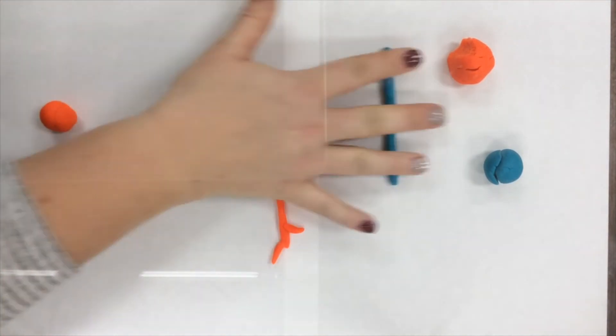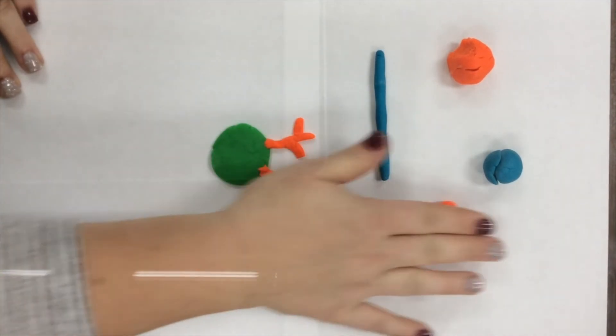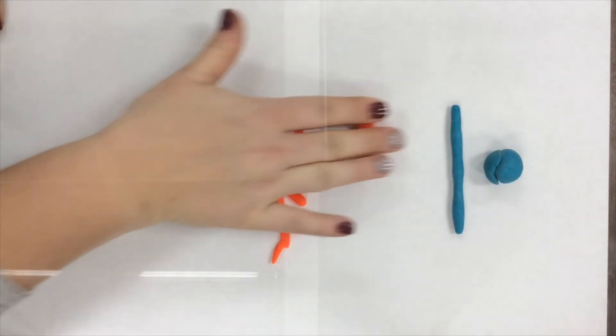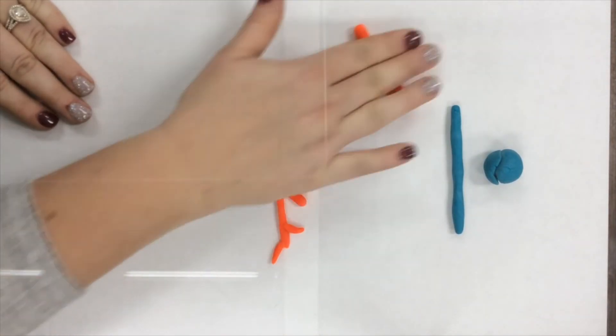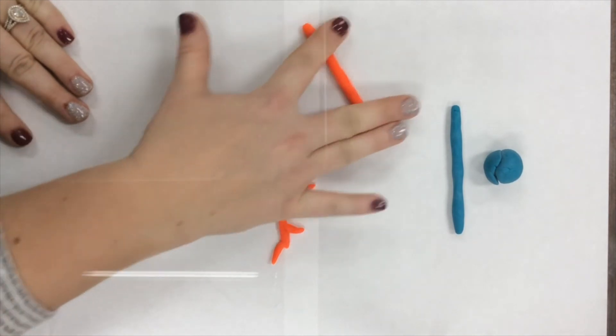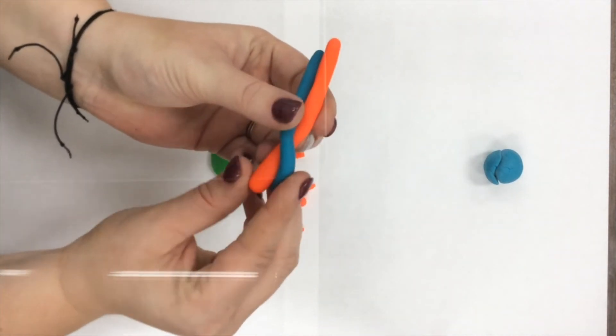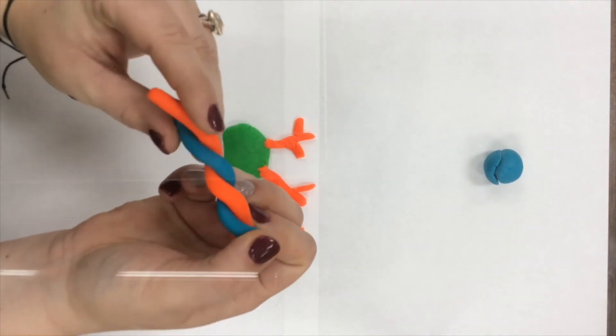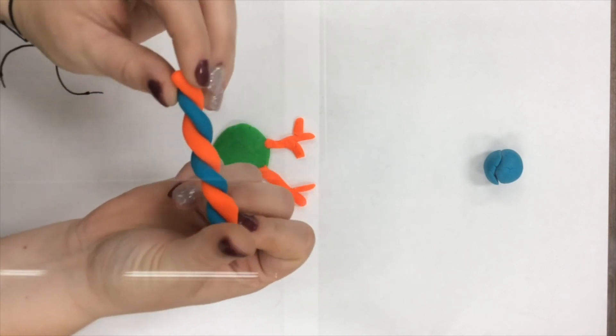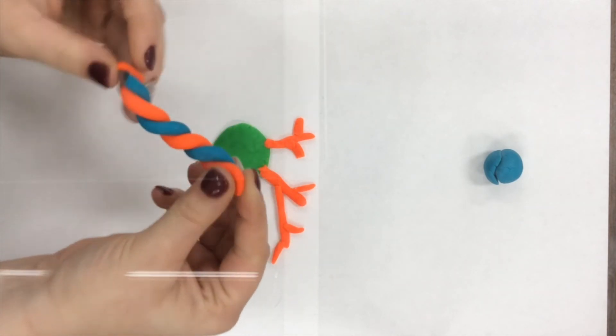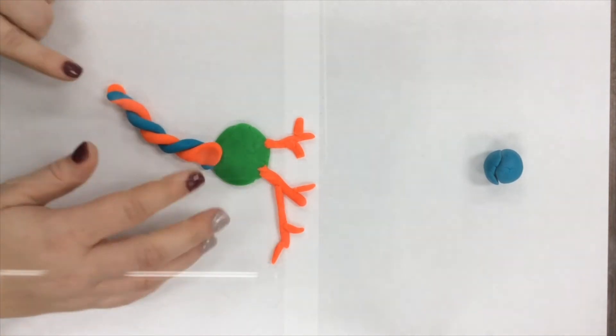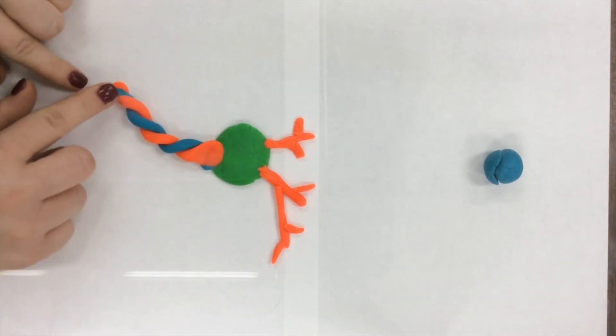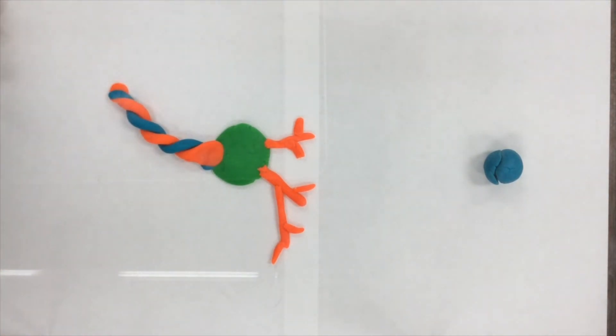I rolled each color into a thin line and then took them and twisted them together to make the axon of our neuron. Here I pinch one end of both clays together. While holding on to the pinched end, I use my other hand to twist the colors together and pinch them closed at the other end. Then I attach the axon to the soma.